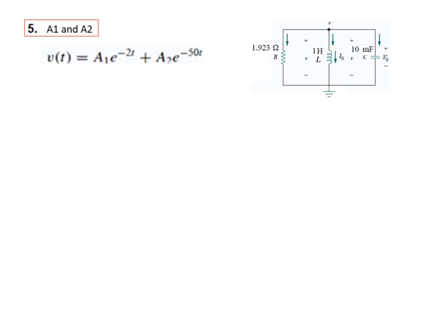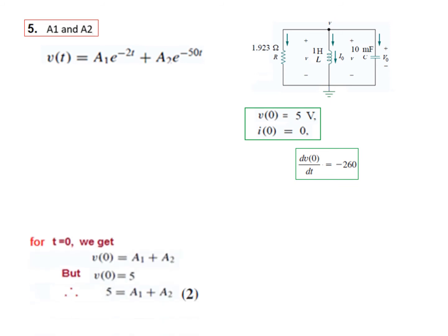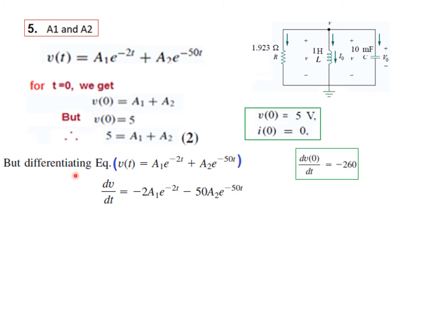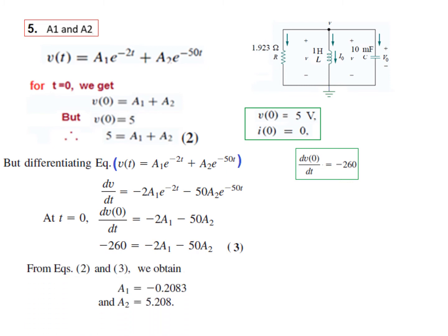Step 4: find A1 and A2. Using the general equation and setting t = 0, we get V(0) = A1 + A2, and since V(0) = 5, that is equation one. Differentiating V(t) and setting t = 0 gives dV(0)/dt = −20·A1 − 50·A2 = −260. Solving these two equations simultaneously yields A1 and A2. Plugging the values back into the general equation gives the final result for question one.